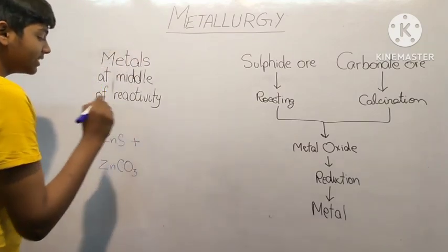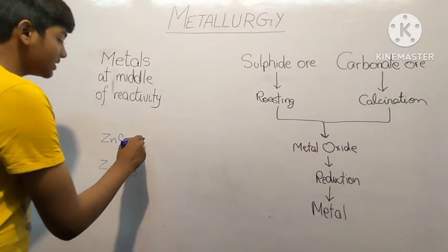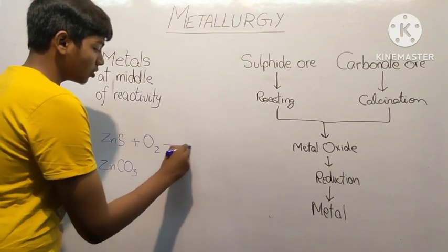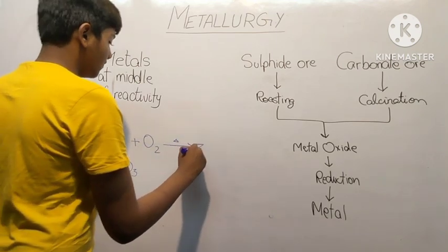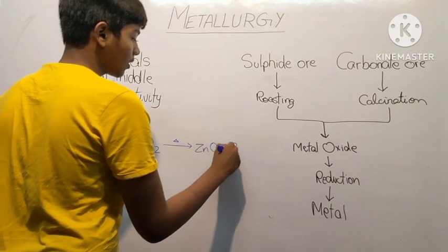Here we have zinc sulfide, ZnS. So what is roasting? Roasting is heating in the presence of excess air, that is oxygen. By heating it we get ZnO plus SO2, so SO2 is a gas which is evolved.